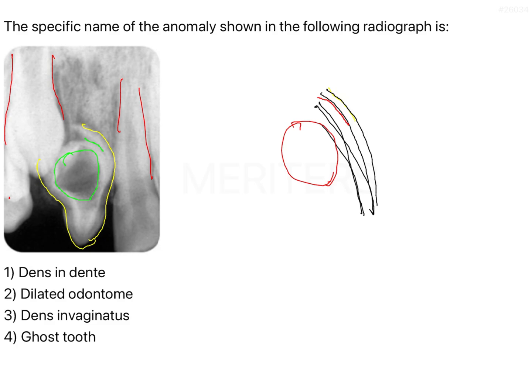Within this radiopacity you again have an entire structure of radiolucency. So basically you have radiopaque, radiolucent, radiopaque, radiolucent — and it all looks like tooth-like structures. Whatever is in yellow is the crown of the tooth, then within the crown you have a small radiolucency, and again within that radiolucency you have a tooth-like appearance. The pink outline is also radiopaque and looks like a tooth — so basically it is a tooth present within a tooth.